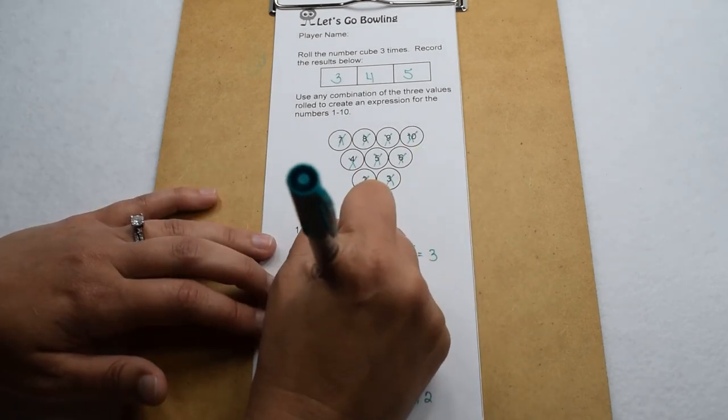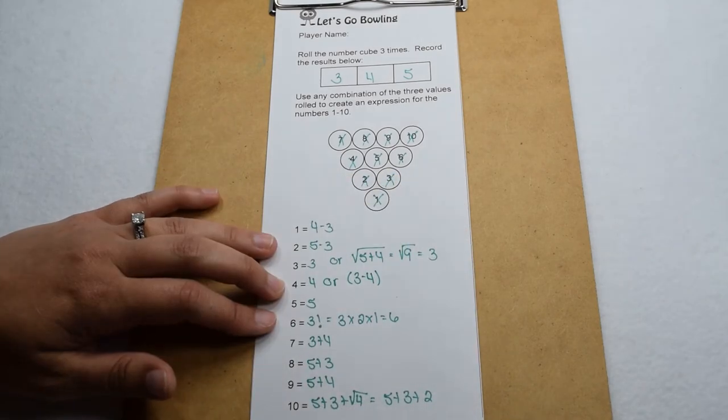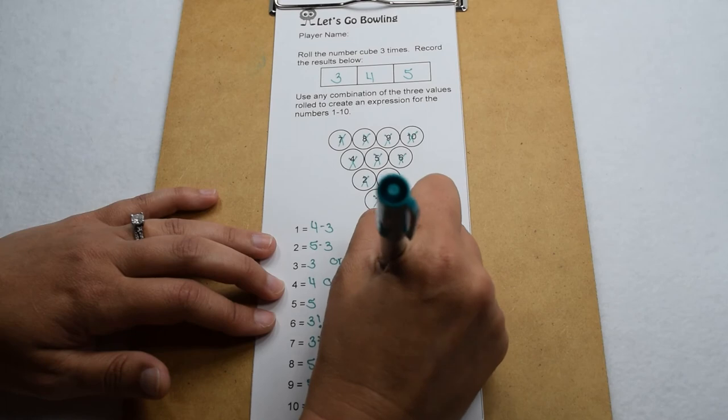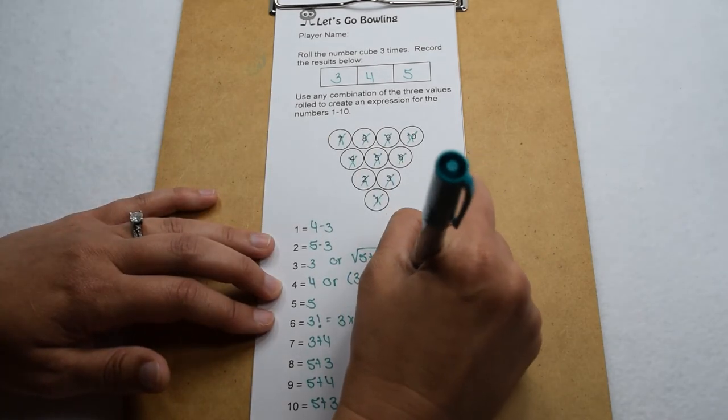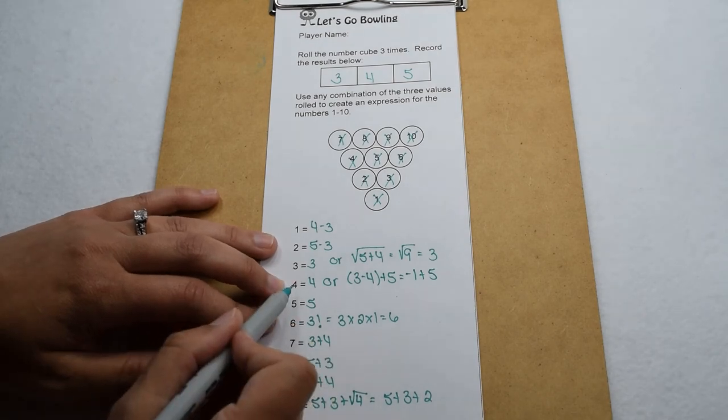For four, we could have used a little order of operations and some negatives. To start with, I could have done three minus four and then added that to five. Three minus four gives me negative one, and then when I add that to five, that's going to take me back to four.